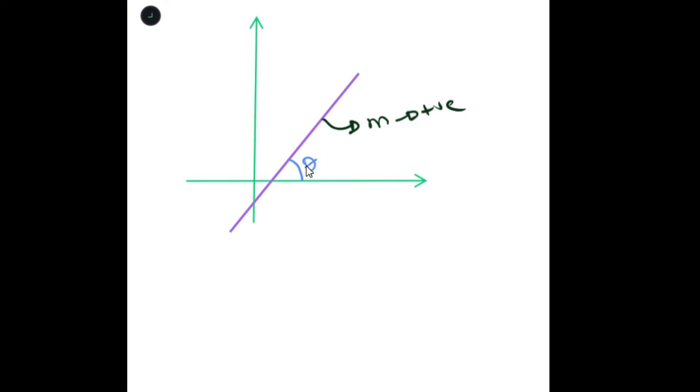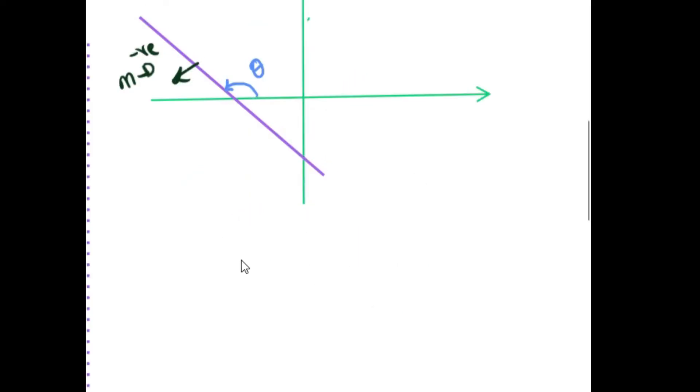Now, whenever your gradient is positive, the angle that it forms is always an acute angle, meaning that it is less than 90 degrees. Whenever your gradient is negative, you expect your angle to be an obtuse angle, right? Meaning that your angle is in between 90 and 180.